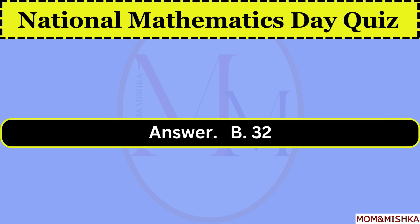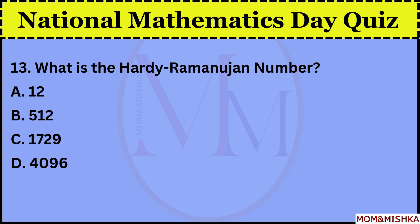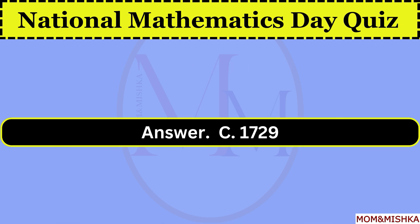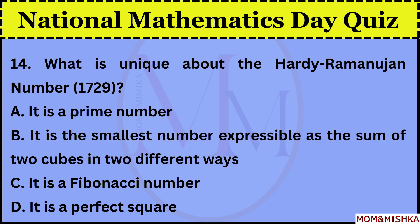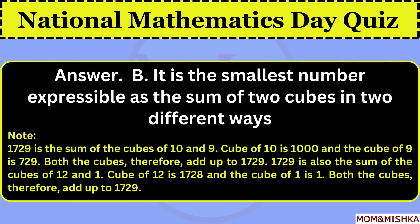32, option B. What is the Hardy-Ramanujan number? 1729, option C. What is unique about the Hardy-Ramanujan number 1729? It is the smallest number expressible as the sum of two cubes in two different ways, option B.